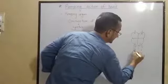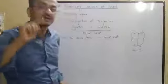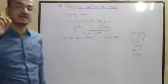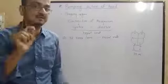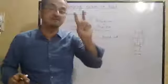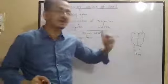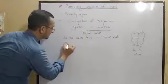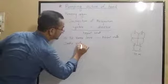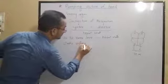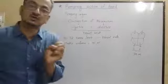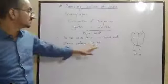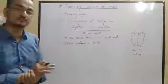Blood from both ventricles comes out with each heartbeat. The blood from the left ventricle and the right ventricle combined amounts to 70 ml per heartbeat. This is called stroke volume — 70 ml of blood comes out of the heart per beat under normal conditions.